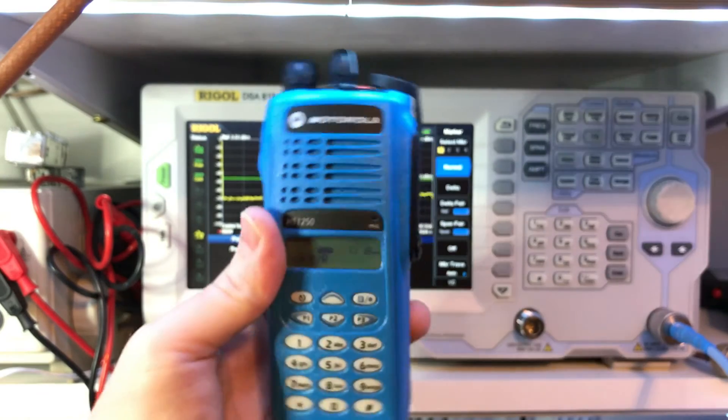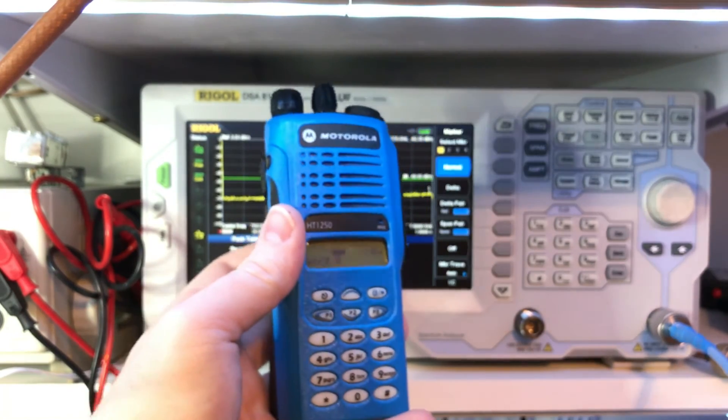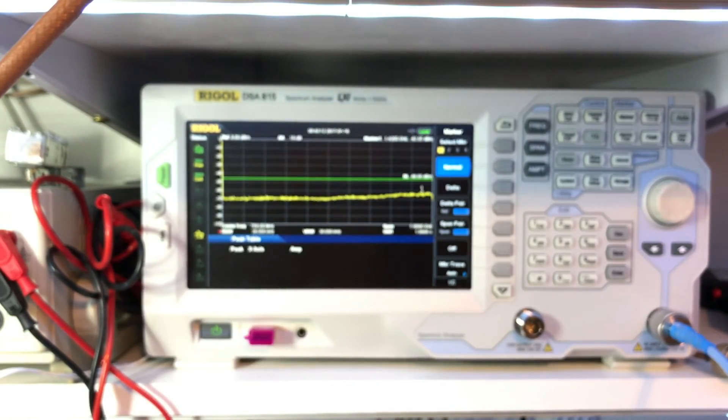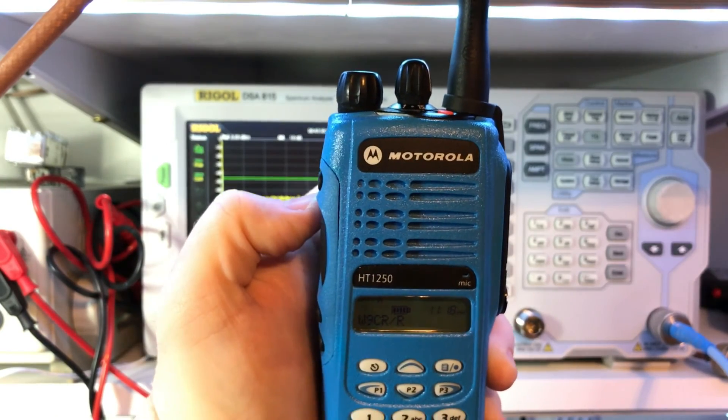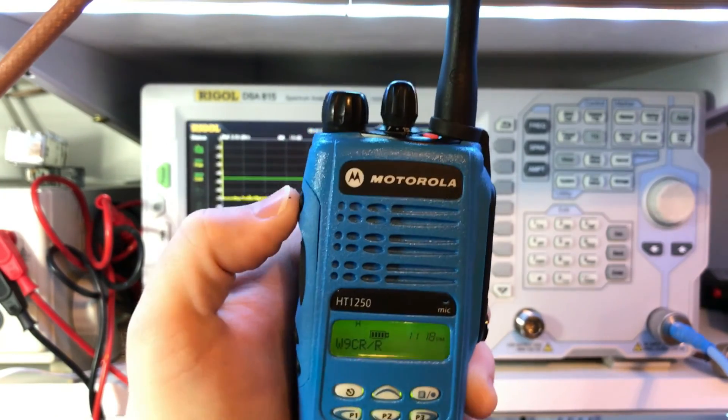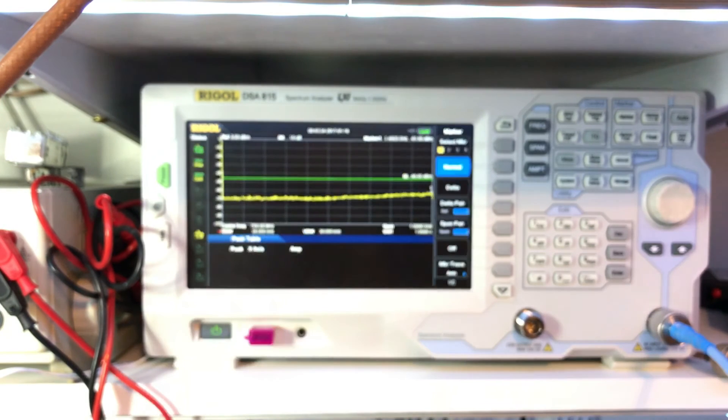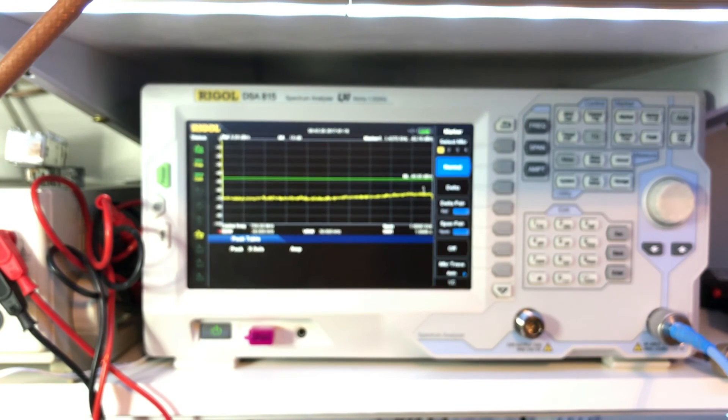I actually have an original Motorola battery on it too. Let me throw an antenna on it and I'll show you it's definitely working. It may not key up here, but it definitely works. Anyways, that's it. Thanks for watching, and that's what your radio should aspire to look like on the spectrum analyzer.